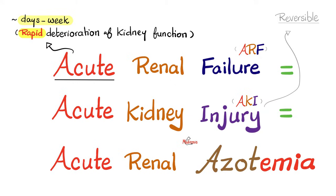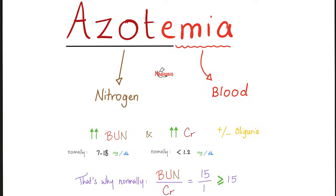Acute tubular necrosis is a subtype of acute renal failure — or acute kidney injury, acute kidney insufficiency, or acute renal azotemia — where the problem happens quickly and it is reversible if treated promptly. What's the normal blood urea nitrogen? Less than 18. Serum creatinine? Less than 1.2. Average BUN is 15 and creatinine is 1, giving a normal BUN to creatinine ratio of 15. A ratio of 15 or higher indicates a good kidney, because a good kidney reabsorbs some BUN but not creatinine. A bad kidney cannot reabsorb BUN, so the ratio drops.